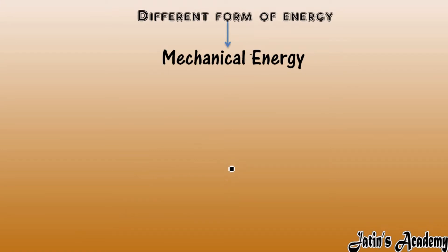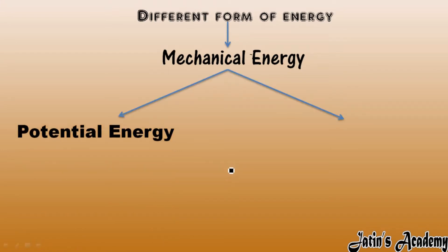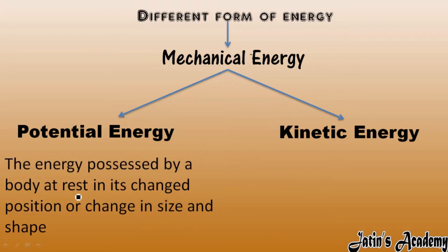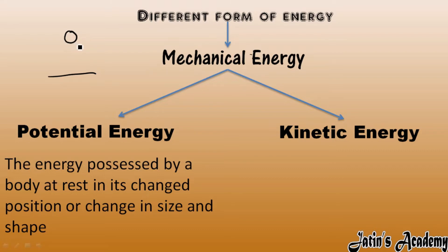Mechanical energy is divided into two parts: first is potential energy, second is kinetic energy. What is the meaning of potential energy? Potential energy is the energy possessed by a body at rest, in its changed position, or change in size and shape. For example, when a ball is at some height from the ground, energy is stored in the body — that is called potential energy.